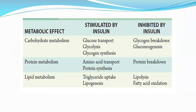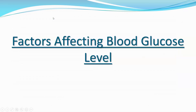Looking at the overall metabolic effects of insulin: on carbohydrate metabolism, insulin increases glycolysis, stimulates glycogenesis (glycogen synthesis), and inhibits gluconeogenesis — the synthesis of glucose from non-carbohydrate sources. On protein metabolism, insulin increases protein synthesis and inhibits protein breakdown. On lipid metabolism, insulin enhances triglyceride synthesis and lipogenesis, and suppresses lipolysis — the breakdown of triglycerides.